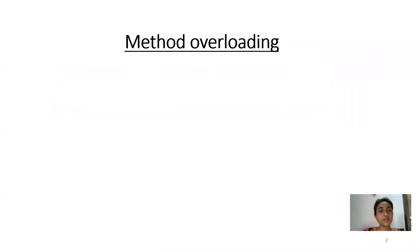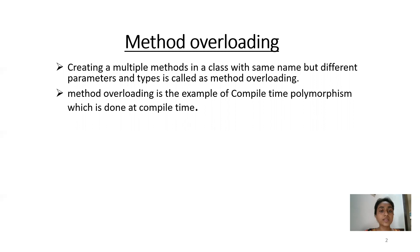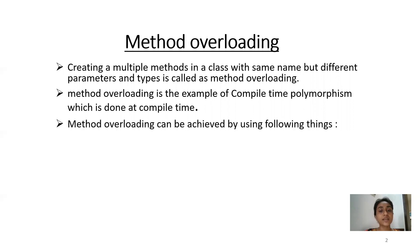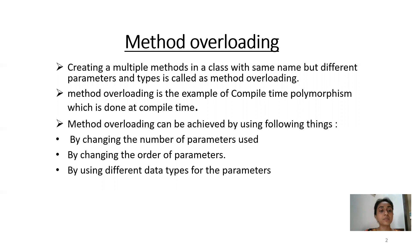Our first topic is method overloading. Creating multiple methods in a class with the same name but different parameters and types is called method overloading. Method overloading is an example of compile-time polymorphism, which is done at compile time. Method overloading can be achieved by changing the number of parameters, changing the order of parameters, or using different data types for parameters.